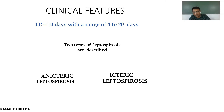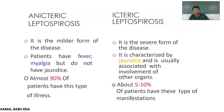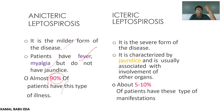The incubation period is about 10 days with an average range of 4 to 20 days. Coming to clinical features, there are two types: anicteric and icteric leptospirosis. Anicteric leptospirosis is the milder form — patients have symptoms such as fever and myalgia and do not have jaundice. Almost 90% of patients have this type of illness. In icteric leptospirosis, there is yellowish discoloration of the eyes, subconjunctiva, tongue, mucosa, and other parts of the body.